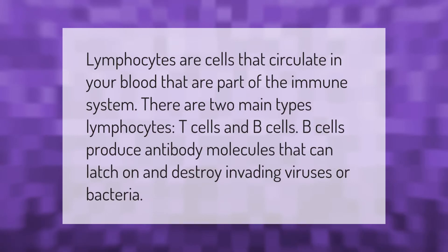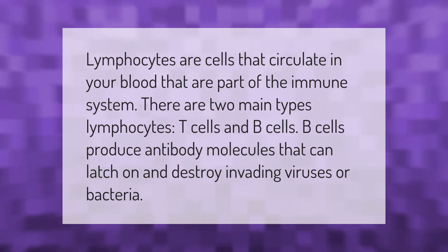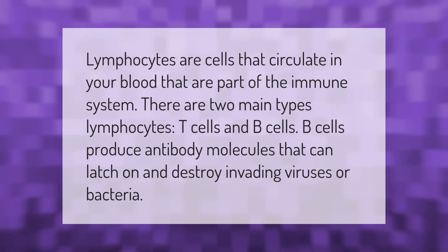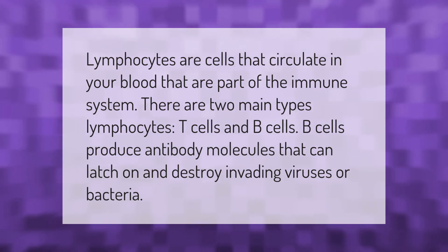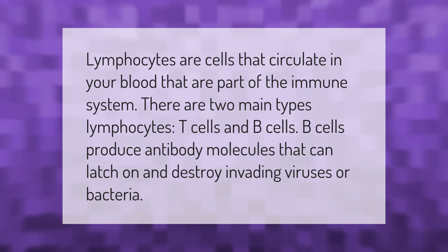Lymphocytes are cells that circulate in your blood that are part of the immune system. There are two main types of lymphocytes: T cells and B cells. B cells produce antibody molecules that can latch on and destroy invading viruses or bacteria.